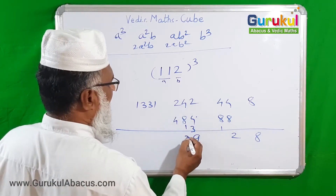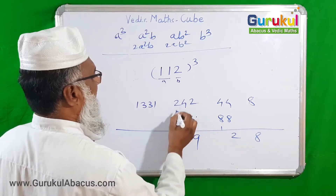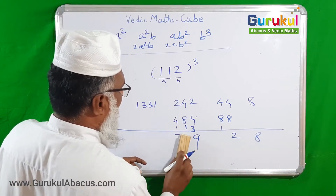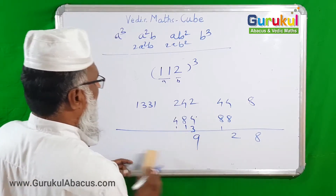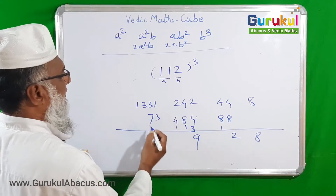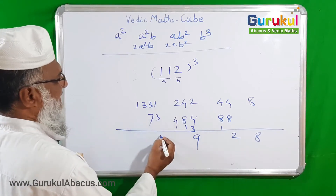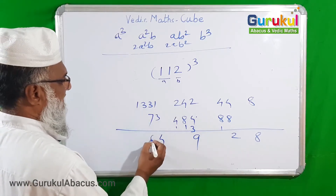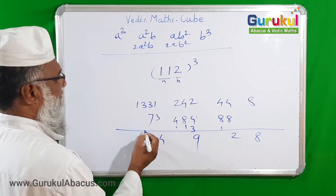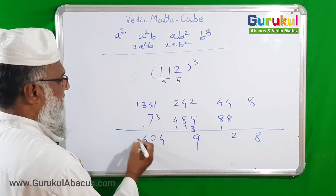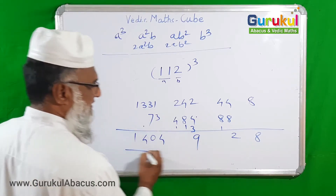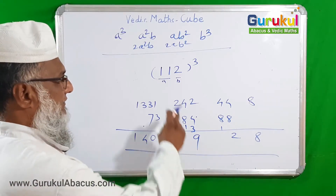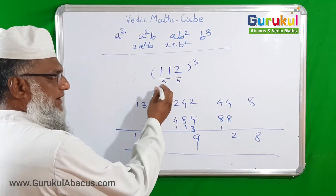Continuing the addition: 2 and 4 is 6, plus 3 is 9. Then 8 and 4 is 12, plus 13 carry is 25 — carry 1. Then 7 with carry gives us 73 as a carrying number. Finally: 1 and 7 is 8, 1 and 3 is 4, giving the final answer. Our A was 11 and B was 2.